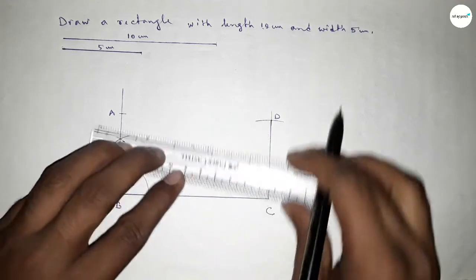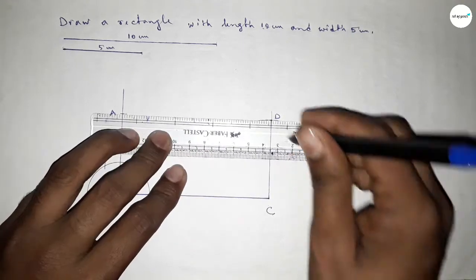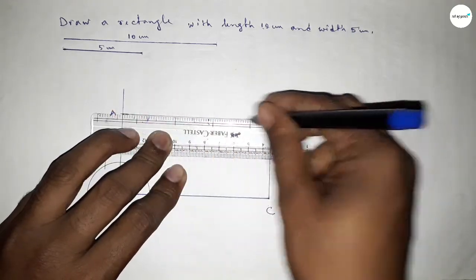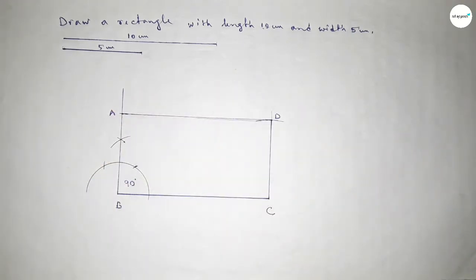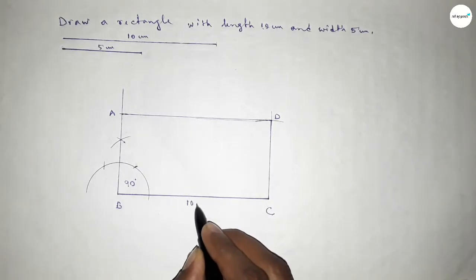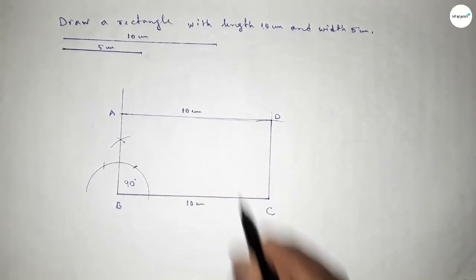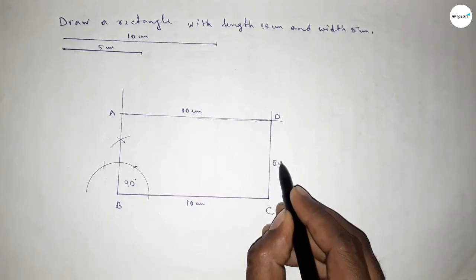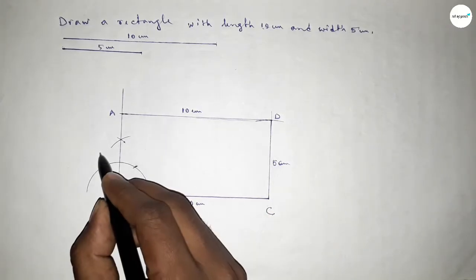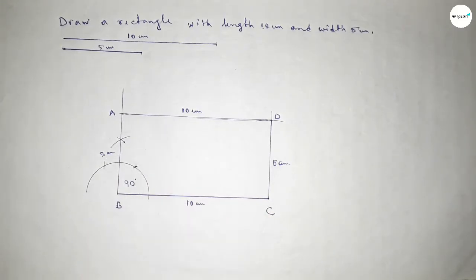First joining C and D, then joining A and D. So this side is 10 centimeter, this side is 10 centimeter, this side is 5 centimeter, and this side is also 5 centimeter. Therefore rectangle ABCD is constructed with length 10 centimeter and breadth 5 centimeter.